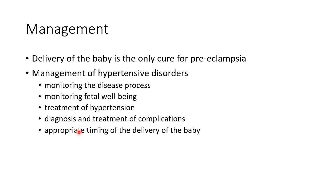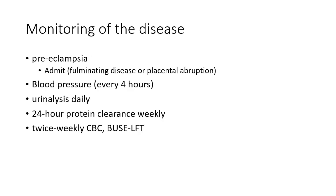Preeclampsia patients should be admitted due to the risk of fulminating disease or placental abruption. Blood pressure should be measured every four hours. Urinalysis should be done daily, and 24-hour protein clearance should be done weekly.